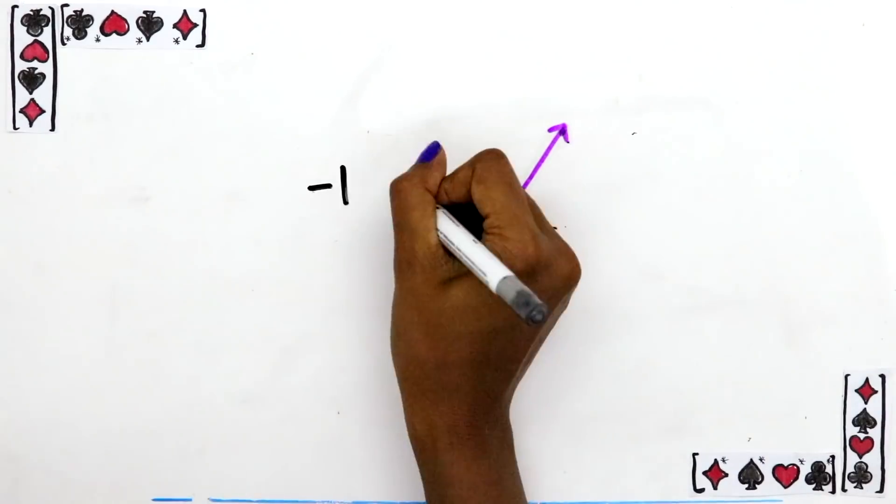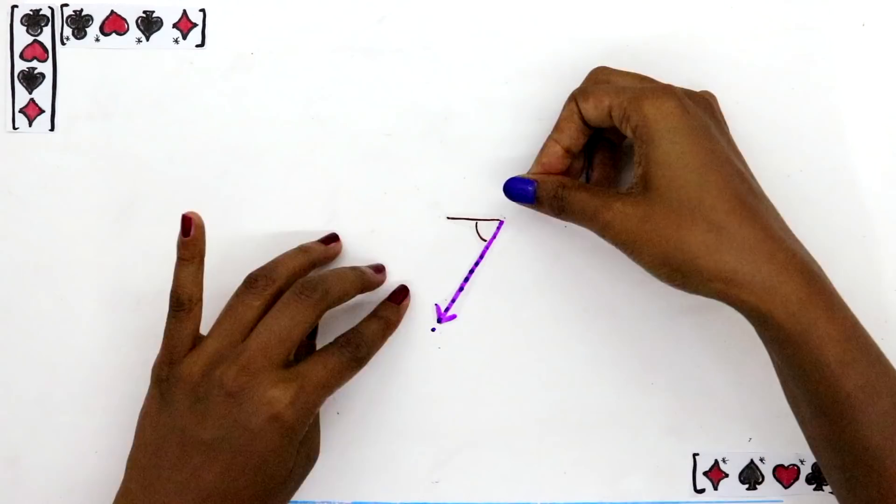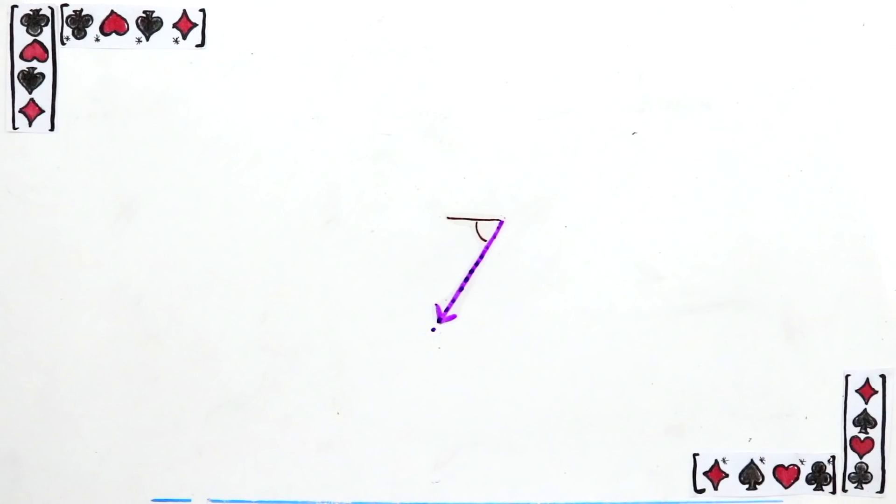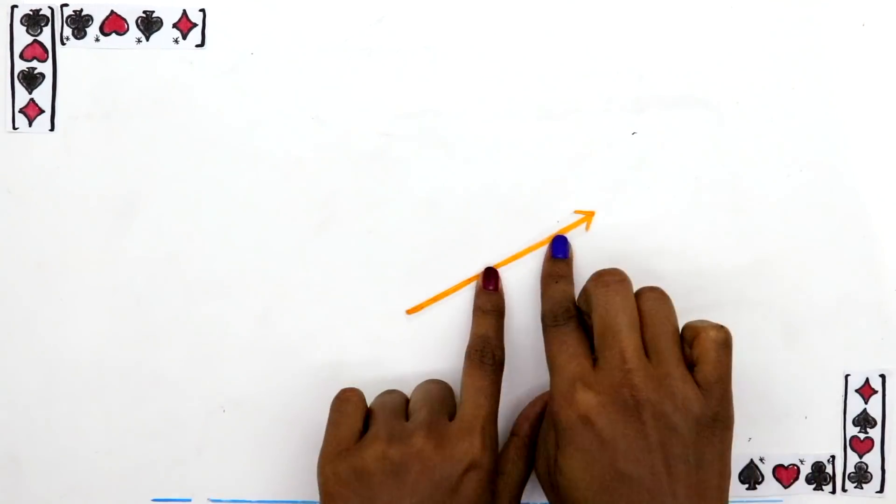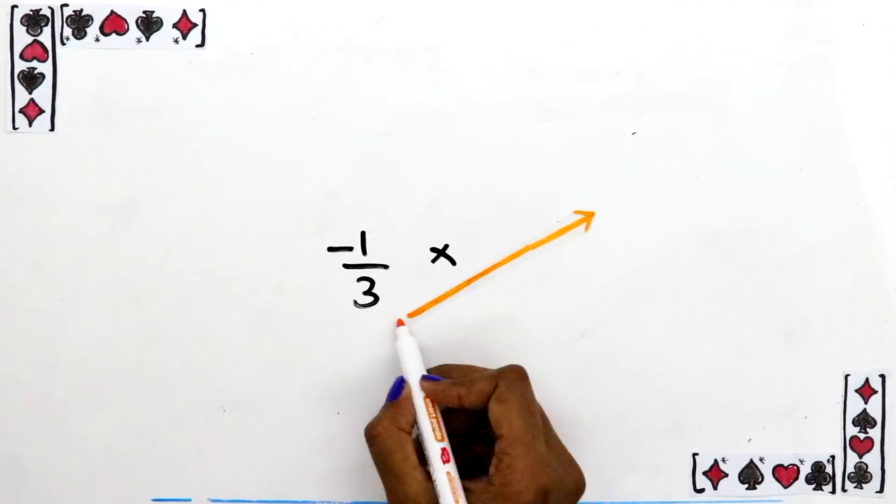But what happens when you multiply it by negative one, for example? It just flips the vector in the opposite direction. And negative a third, for example? That just flips its direction, then squishes it by a third.